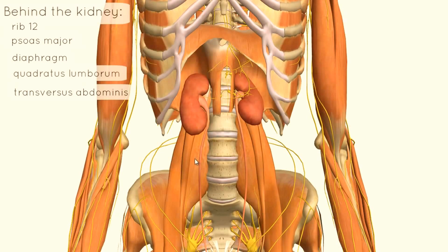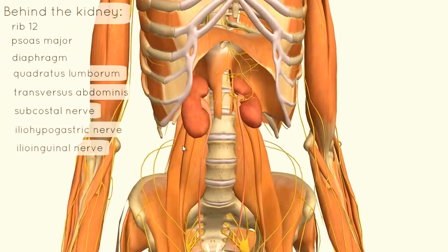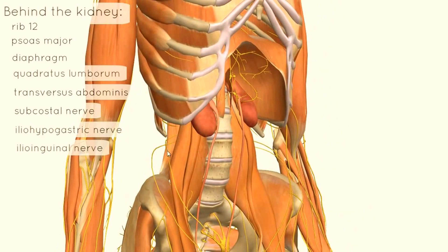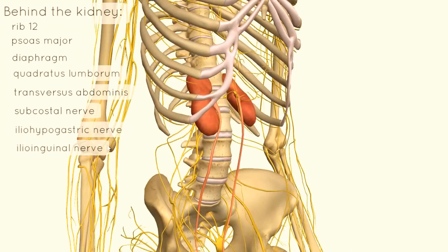And then you've got a couple of nerves posteriorly: the subcostal nerve, the iliohypogastric nerve, and the ilioinguinal nerve. You can see the iliohypogastric and ilioinguinal nerves here. That's what lies behind both kidneys.